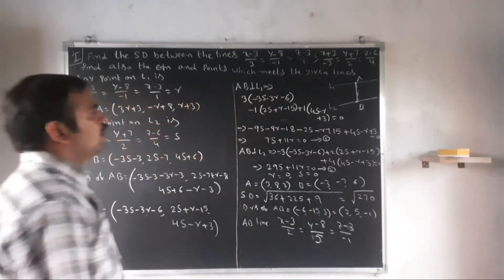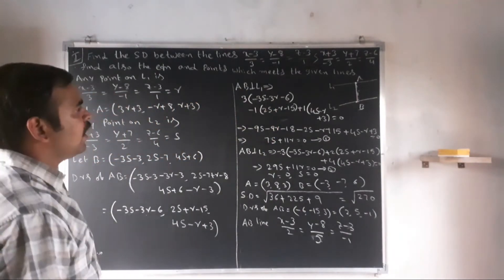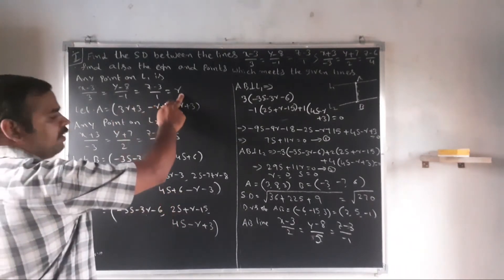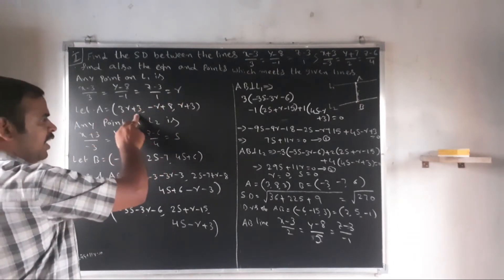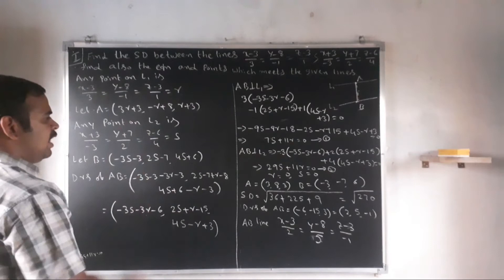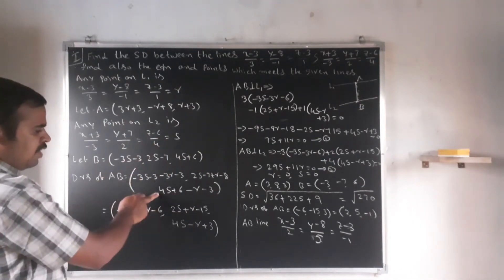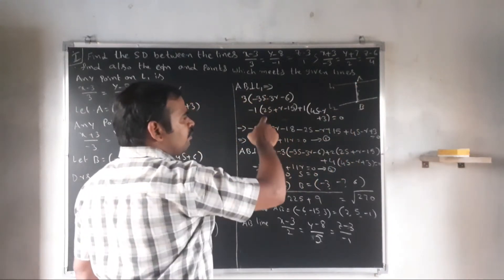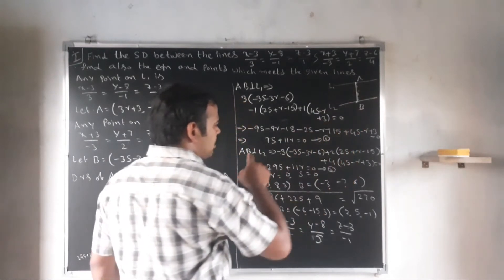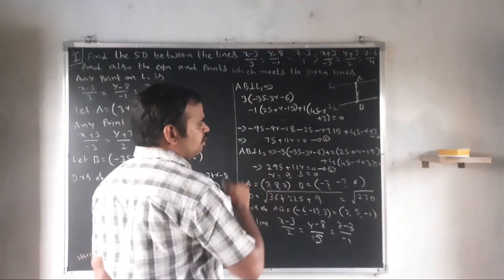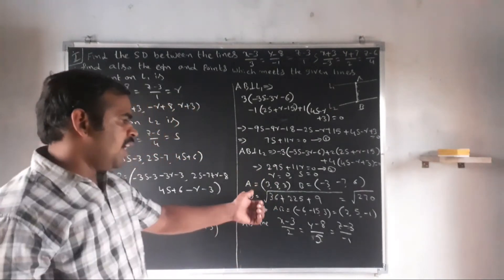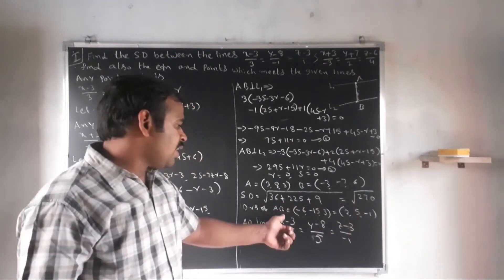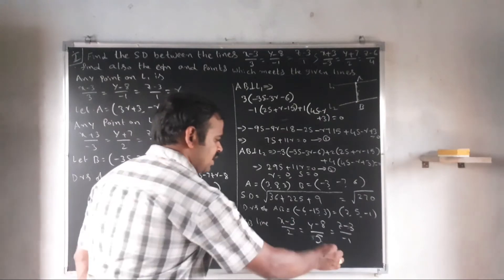This is a very important problem. Summary of Method 1: find any point A on L1 and point B on L2 by setting equal to R and S respectively. Find direction ratios of AB. Use AB perpendicular to L1 and AB perpendicular to L2 to solve for R and S, then find A, B, the shortest distance, and the SD line equation.